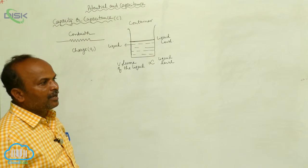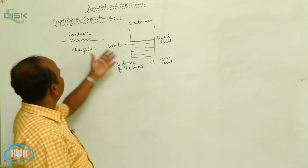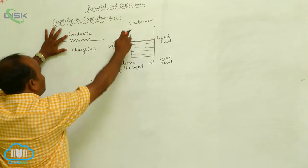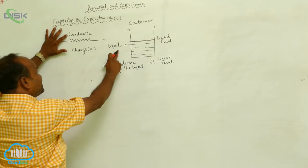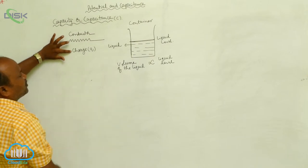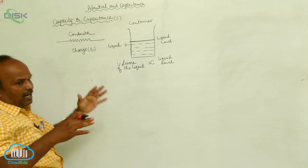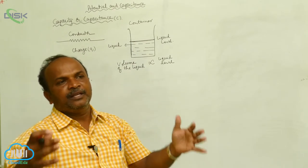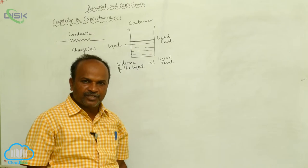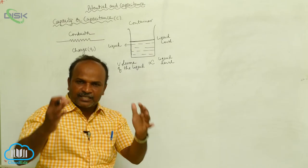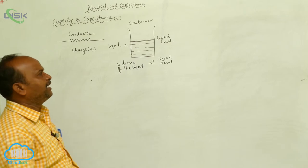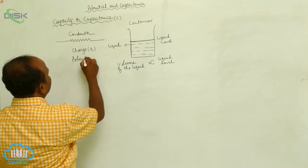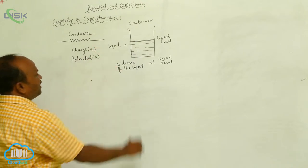The volume of the liquid is directly proportional to the liquid level. Therefore, more volume means higher liquid level; less volume means lower liquid level. Comparing this to the conductor: there may be a little or more amount of charge on the conductor. The physical status of the charge can be explained through the potential, represented by V.